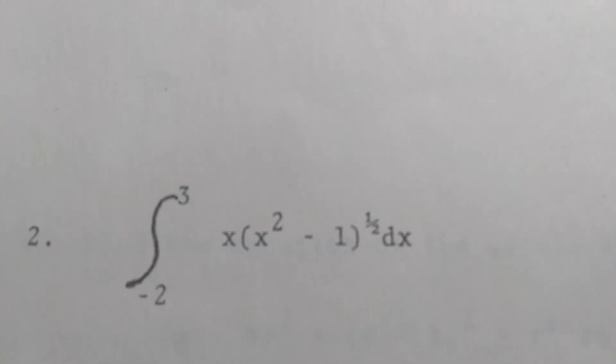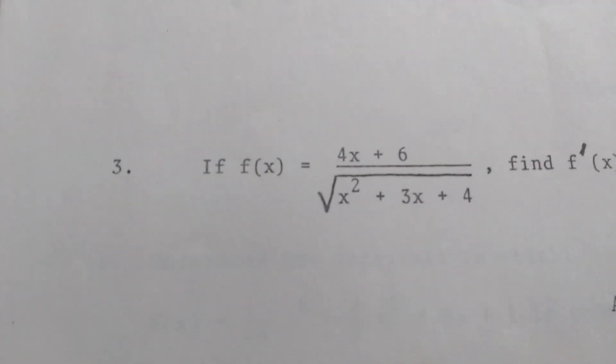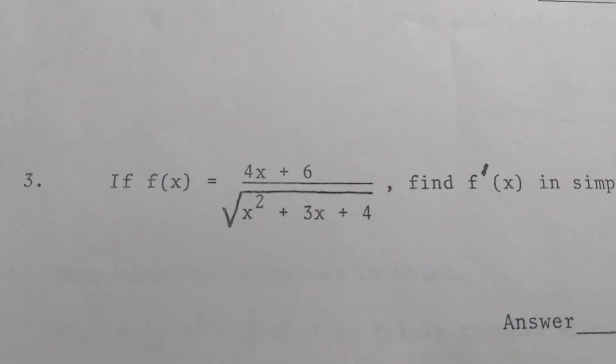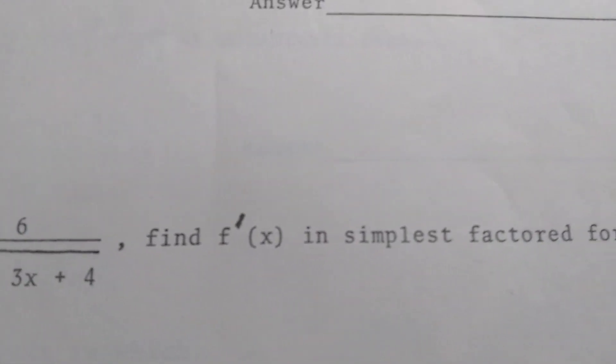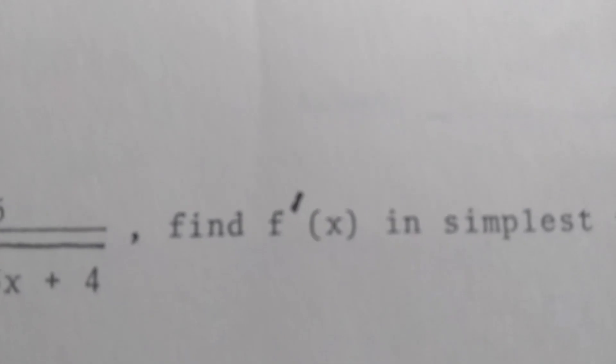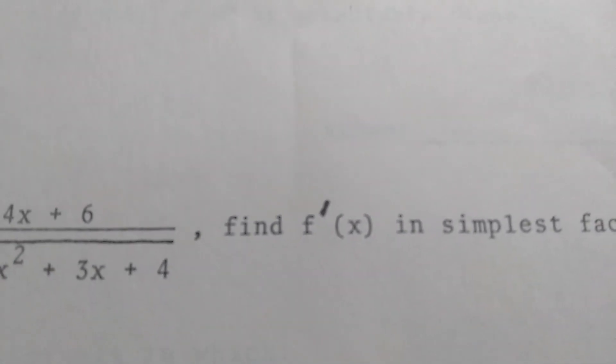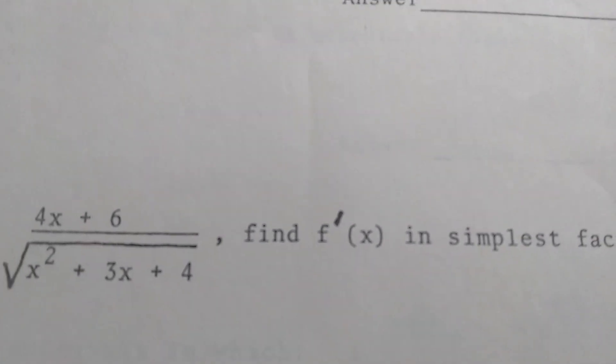Number two is an integral. Okay that's not so bad there. Three is a derivative. Looks like it could be kind of messy. It says find f prime of x. Oh that's great. They used a pen or a pencil to put the prime symbol there. It's not even typed in.